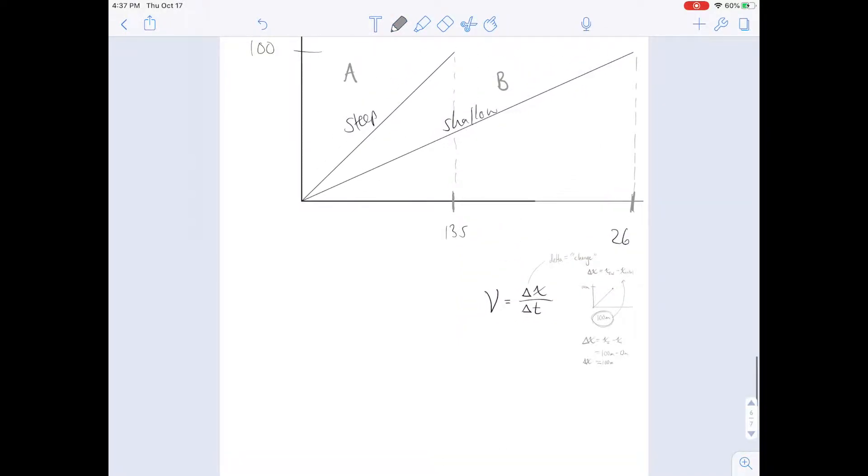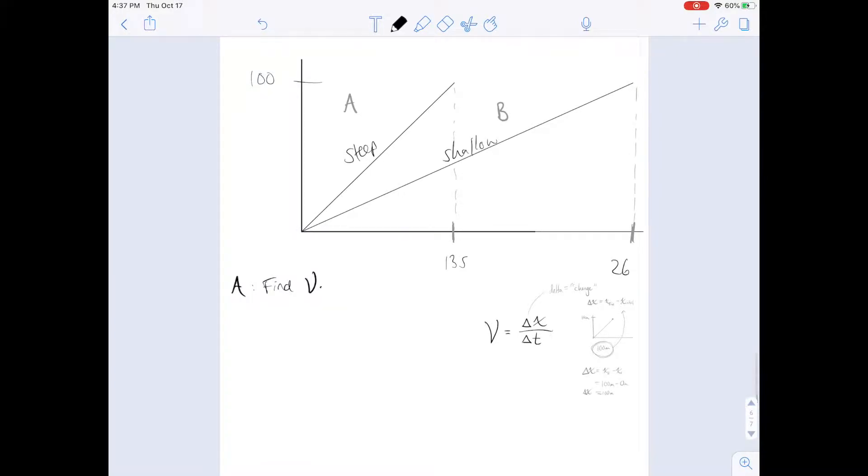So the first one with student A, we need to find the velocity, and we need to make sure that we use the right equation. We could do it in our brains if we wanted, but we'd have to show our work. So we copy our equation of V equals delta X over delta T. We know that delta X is 100 meters, because that's how far they ran. That's what we see on this poorly labeled position axis.